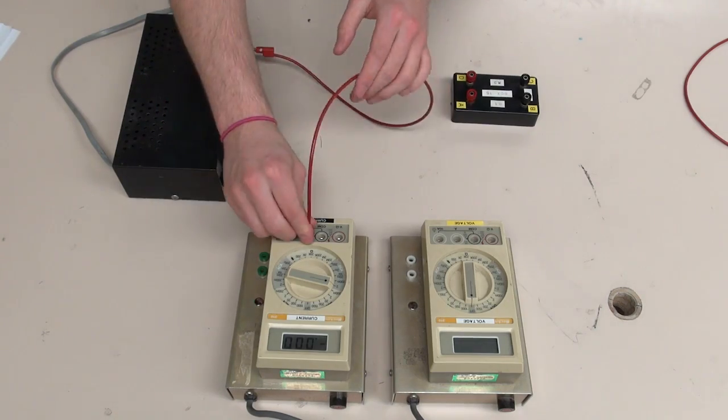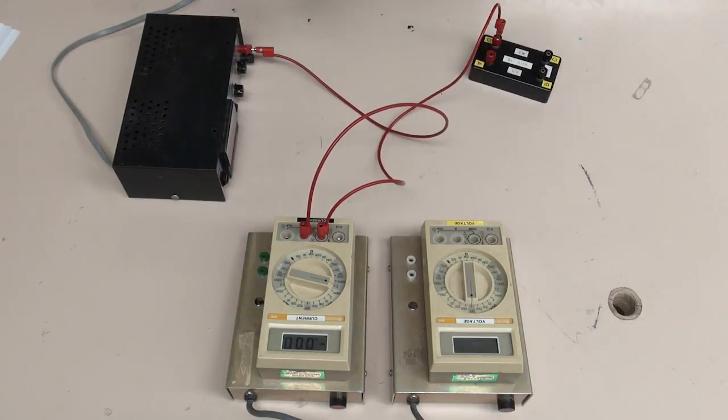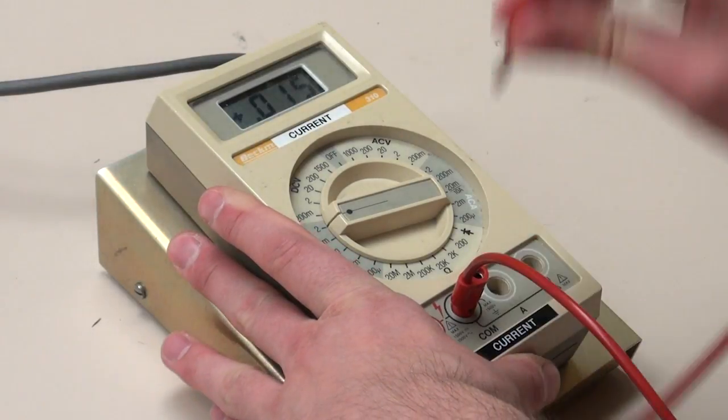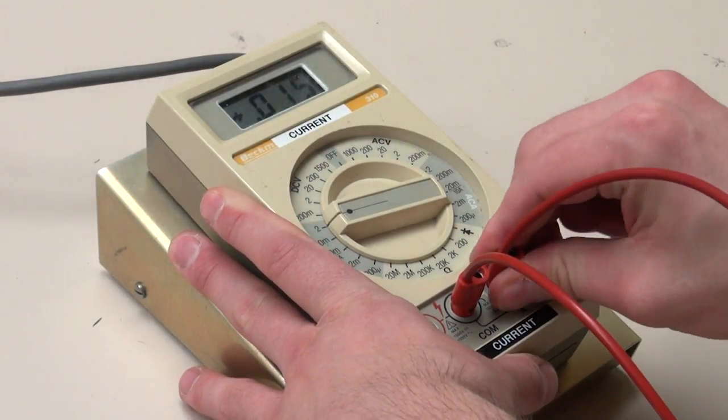Ammeters are connected in series because we want to measure the current flowing through the component. Note that if the ammeter is disconnected from the circuit, the circuit is no longer complete and no current can flow.